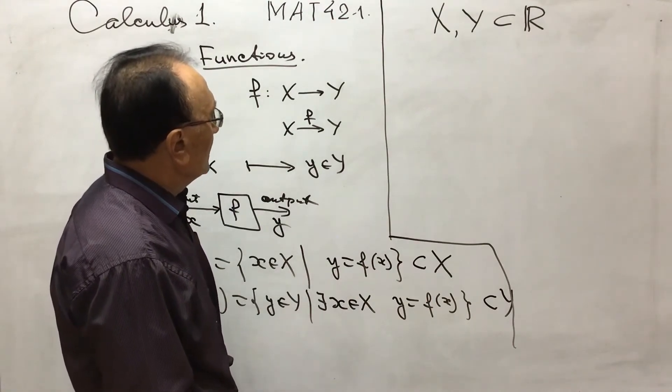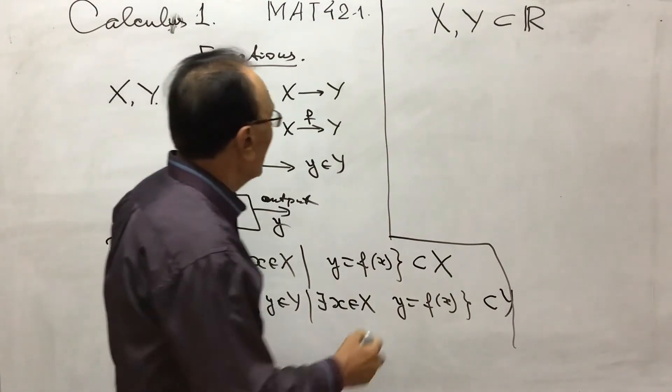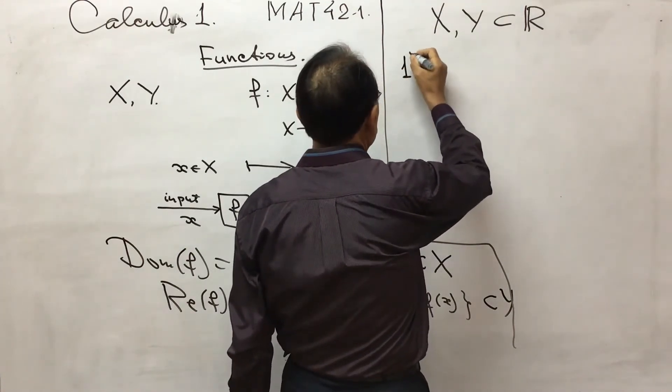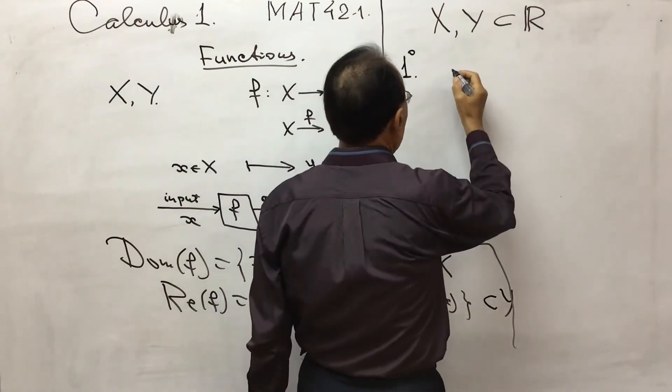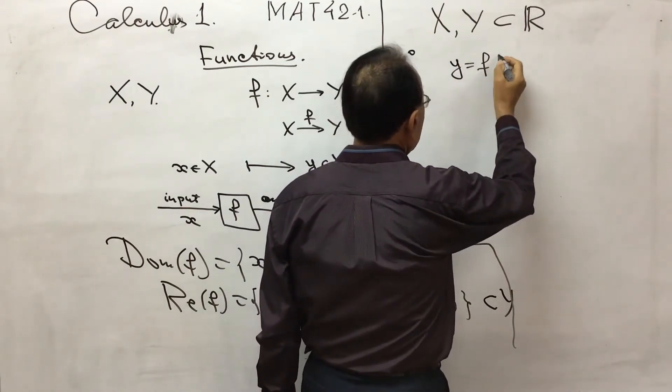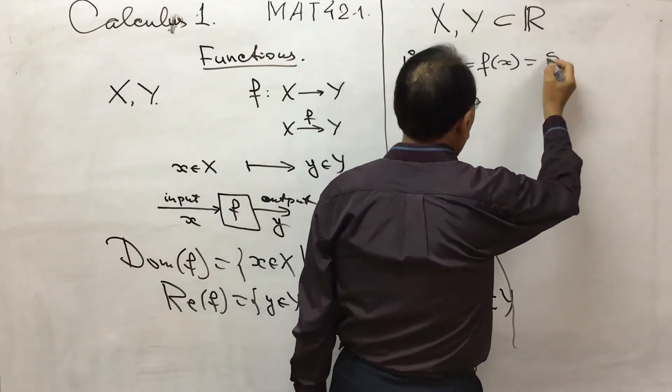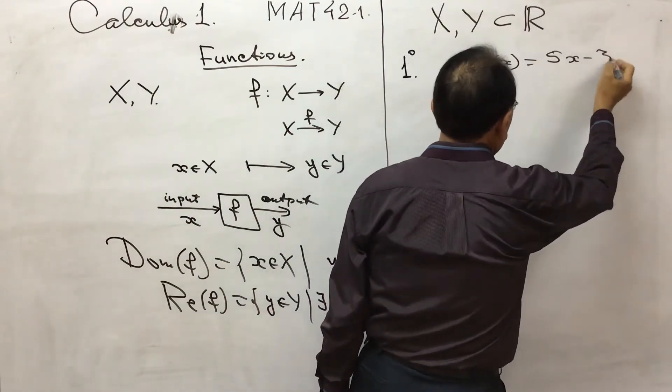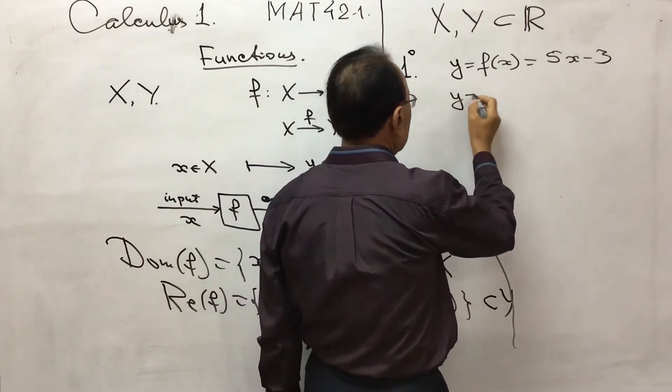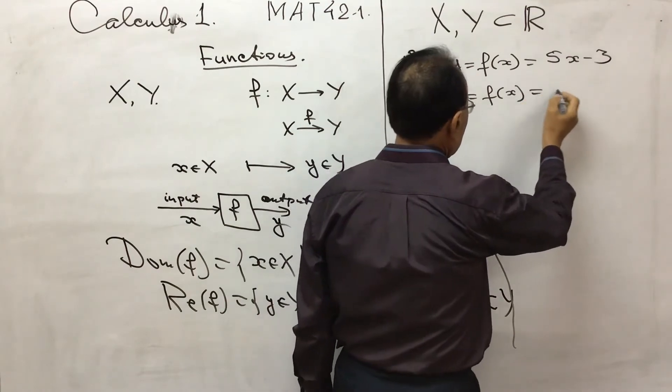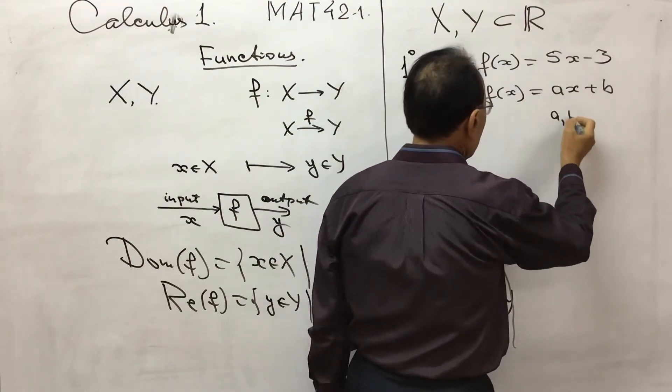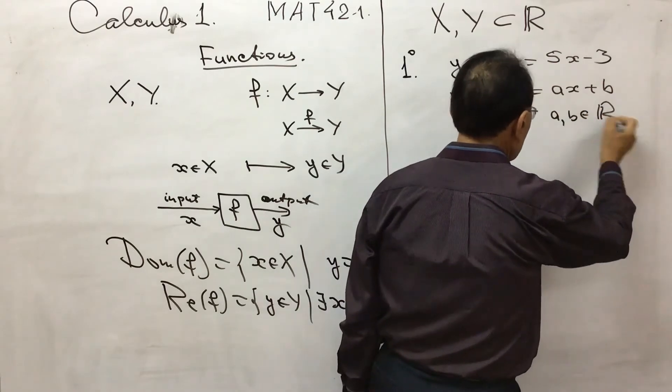So now, let us consider some examples. Example number one. Very simple example. So I will write as y = f(x) = 5x minus 3. Or more general, y = f(x) = ax plus b, where a and b, they are real numbers.